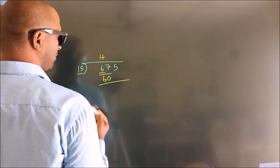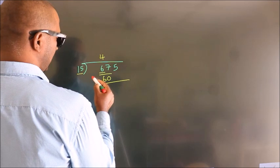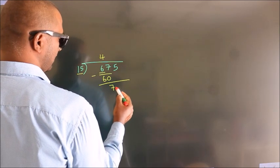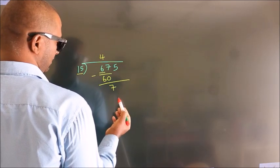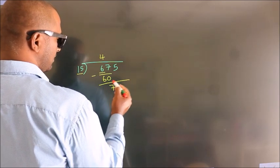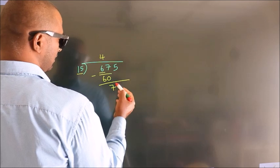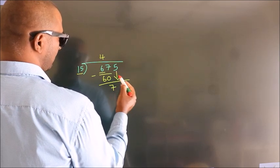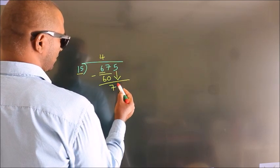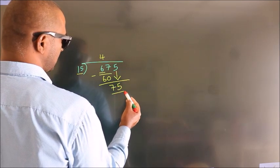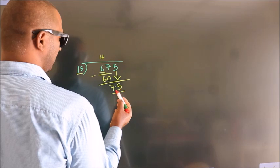Now we should subtract, and we get 7. After this, bring down the beside number — 5 comes down, so we have 75.